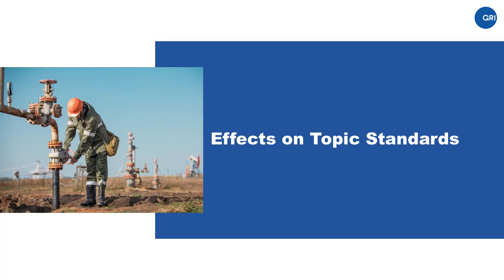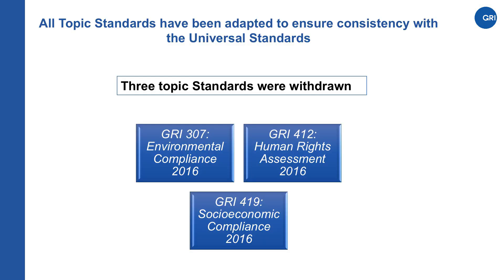All GRI topic standards have been adapted to ensure that they are compatible with the revised universal standards. Importantly, the disclosures and the numbering have not changed, and the information to be reported remains the same. Three topic standards were withdrawn because their contents were revised and integrated into the universal standards — these were topic standards on compliance and human rights assessment.